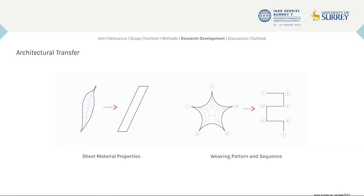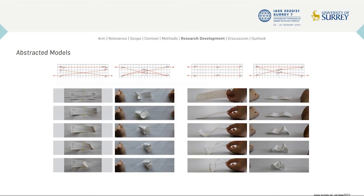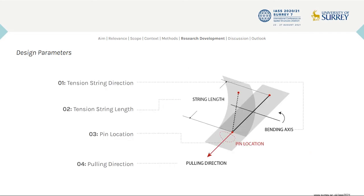These principles are transferred to architecture as sheet material properties and geometry, and weaving pattern and sequence, respectively. Abstracted models are made from rectangular paper strips to experiment with fiber weaving. A graphical notation system was devised to denote the fiber path, fiber direction, and the weaving sequence. These models help define a series of design parameters, such as the geometric constraints of pins and string lengths, and provide empirical rules to reference during further experimentation.